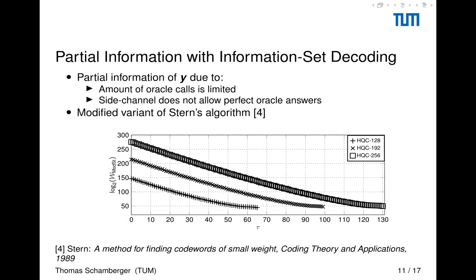In addition, we show how to use partial information from our attack with information set decoding such that we get a reduction in the security level. How can we obtain or what are the reasons why we obtain partial information of Y? This can be due to that the amount of oracle calls is limited. So we can just observe a certain amount of side channel traces of the device. Or we don't have perfect oracle answers. And what we show here is a modified variant of the Stern's algorithm, which is information set decoding, where we feed in our partial attack results. And based on the amount of known ones in the support of Y, we then give the work factor, resulting work factor.